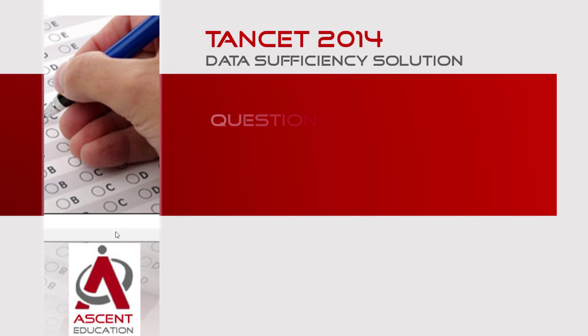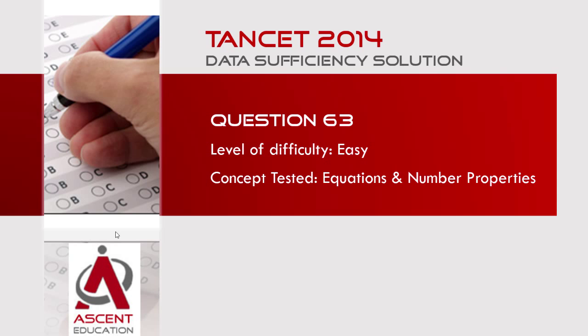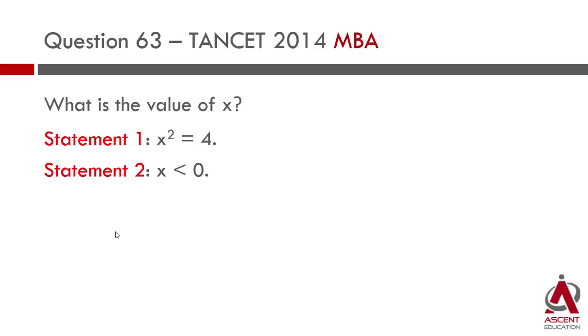This is a data sufficiency question that appeared in TANCET 2014, question 63. It's an easy question from the topic of equations and number properties. Let's have a look at the question. What is the value of x? Two statements follow this. The first statement is x squared equals 4, and the second one is x is less than zero.